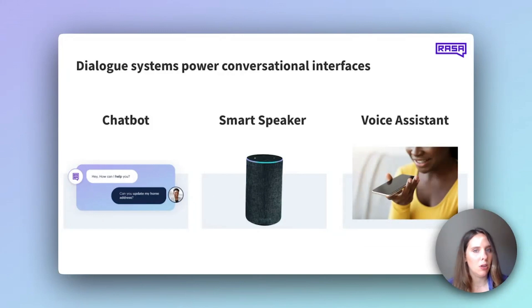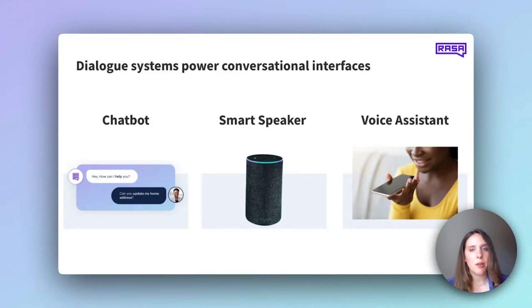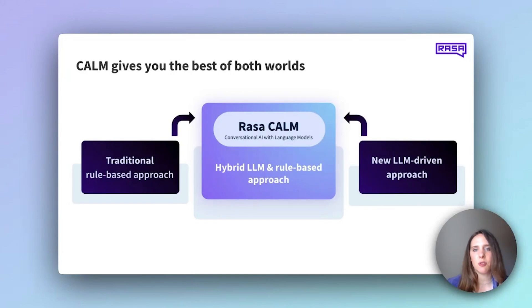While these language models are powerful, as the technology stands today, they don't solve all problems on their own. To be truly effective in a customer service context or contact center where response accuracy and service quality are essential, they must operate within a structured framework to deliver consistent results. The Rasa platform provides one such framework. With its CALM dialogue system — Conversational AI with Language Models — Rasa combines the reasoning power of language models with traditional rule-based guidance to ensure business processes and policies are consistently followed and that there is a cohesive brand experience.